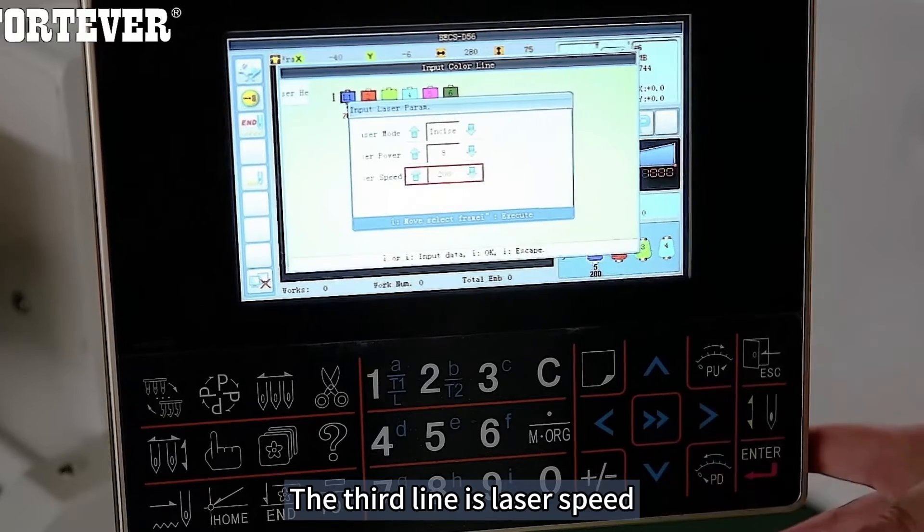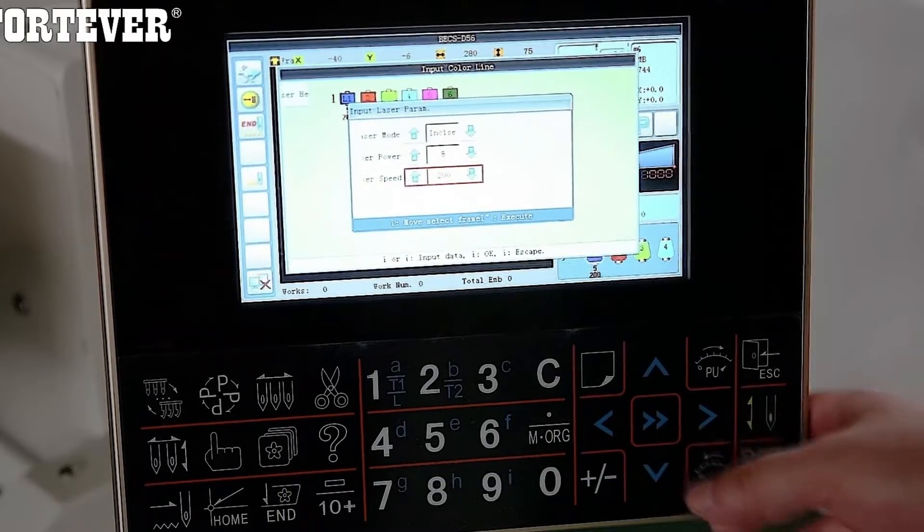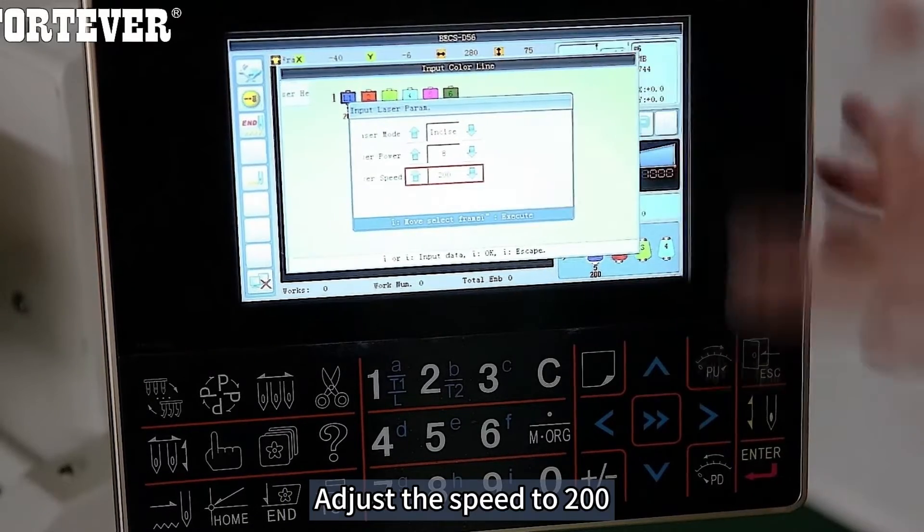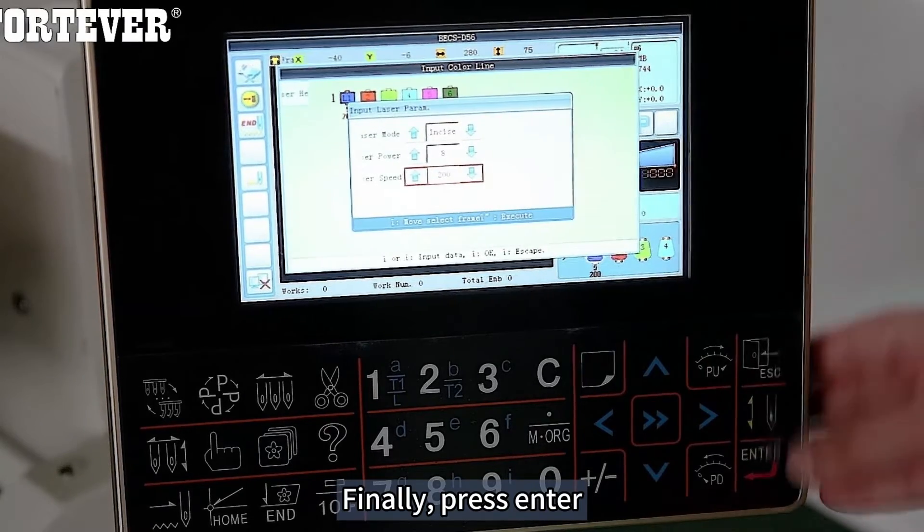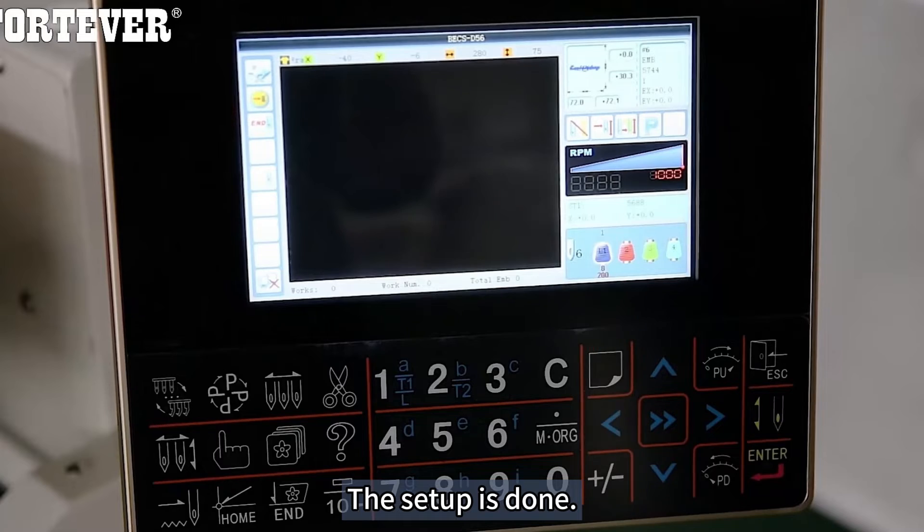The third line is laser speed. Adjust the speed to 200. Finally press enter. The setup is done.